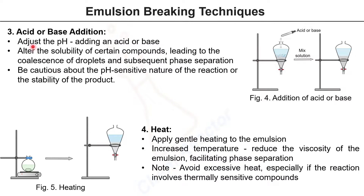The next technique is acid or base addition to the emulsion. Adding an acid or base to the reaction mixture can alter the solubility of certain compounds, leading to coalescence of droplets and subsequent phase separation. Use caution if you have sensitive compounds in the emulsion.